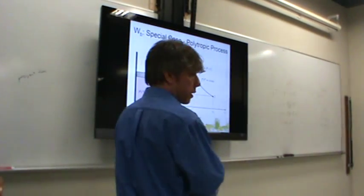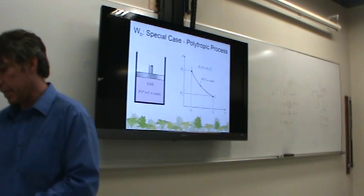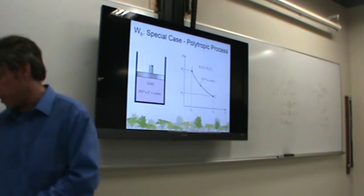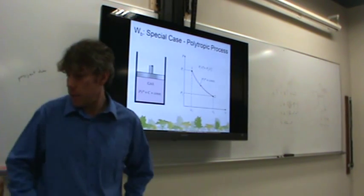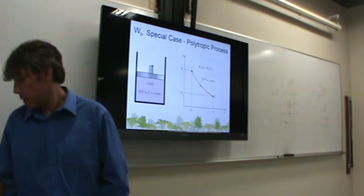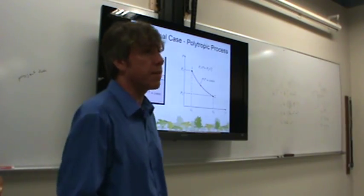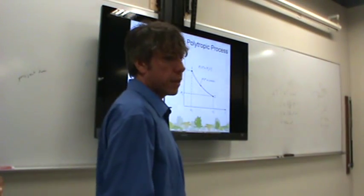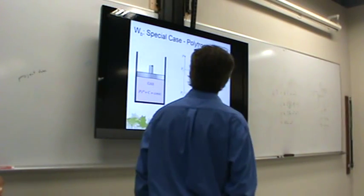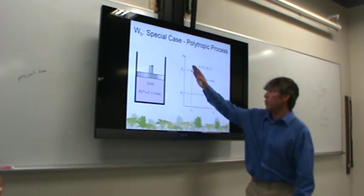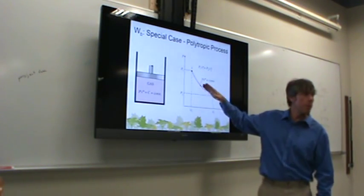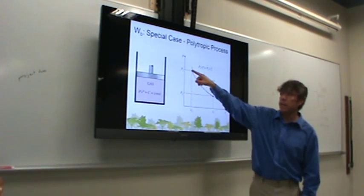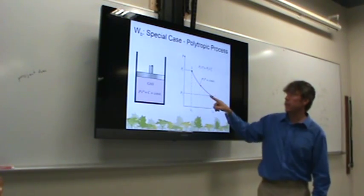There are some special cases for boundary work. What I want you to do is add some equations at the back of the chapter, because your author does not have all of the boundary work equations that are convenient. Since boundary work is an area under a curve, if we don't know the shape of that curve, we can't figure out the boundary work. But if we do know how pressure depends on volume, that defines the line and allows us to calculate the area, which is boundary work.